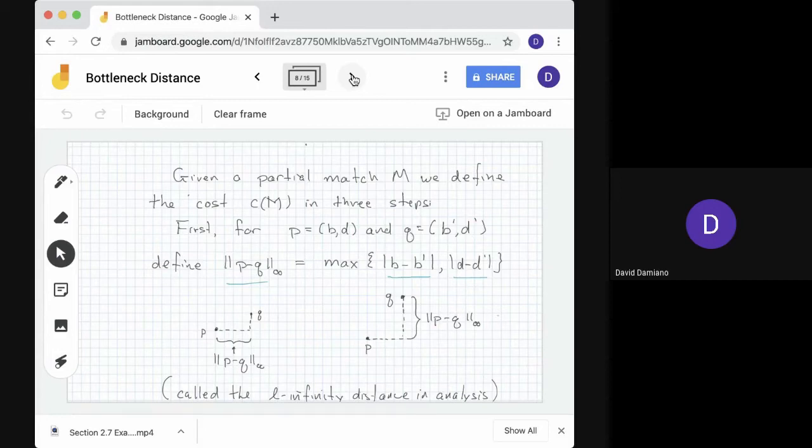So here are two pictures. On the left, we see that maximum value is in the B direction. That's the L infinity distance. On the right, we see the maximum value is in the D direction. So that's the L infinity distance.